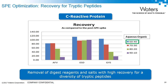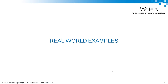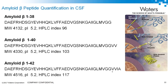In the example for C-reactive protein, we've digested it and are looking at recovery for the signature peptides. We want to use the minimum amount of organic in elution to leave behind hydrophobic interferences, and wash with a small percentage of organic to eliminate digest reagents and salts. In this case, 40% organic was found to be optimal. The same holds true when looking at a variety of different monoclonal antibodies and both unique and generic signature peptides — again, the optimal was at about 40% organic.